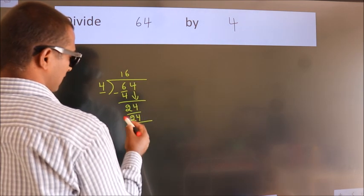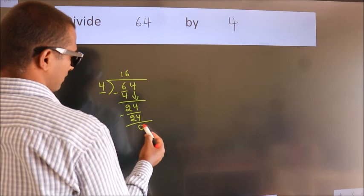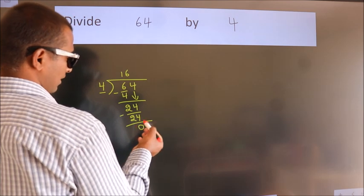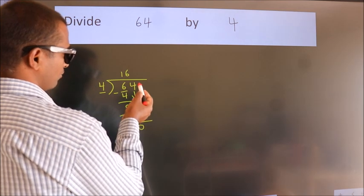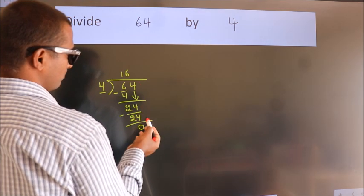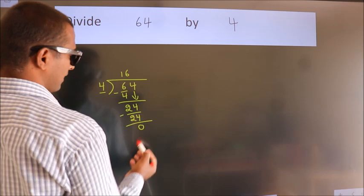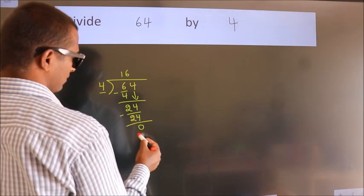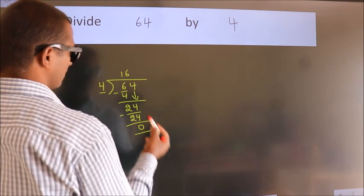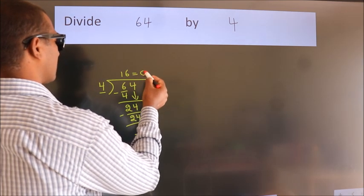Now we subtract. We get 0. After this, there are no more numbers to bring down, and we got remainder 0. So this is our quotient.